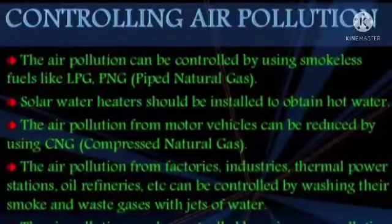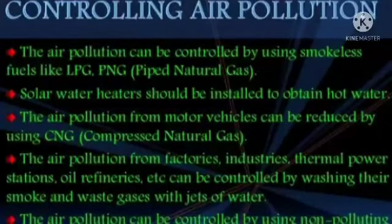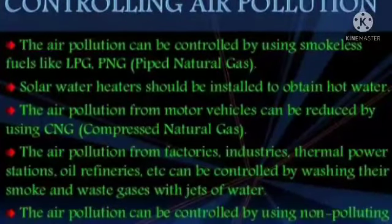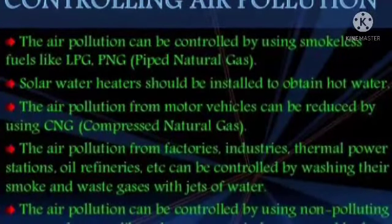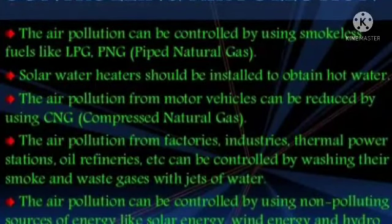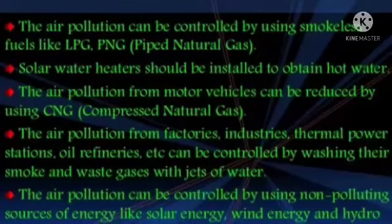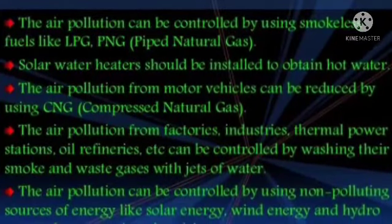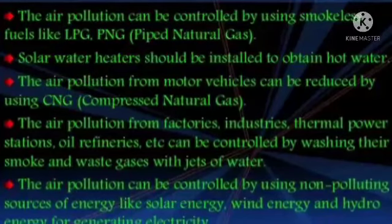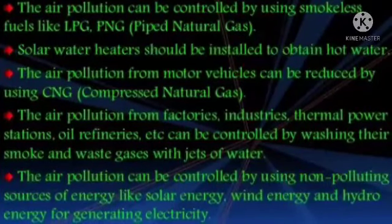Air pollution can be controlled by using smokeless fuels like LPG and PNG (piped natural gas), installing solar water heaters, and using CNG (compressed natural gas) for motor vehicles. Pollution from factories, industries, thermal power stations, and oil refineries can be controlled by washing their smoke and waste gases with jets of water. Non-polluting sources of energy like solar energy, wind energy, and hydro energy should be used for generating electricity.